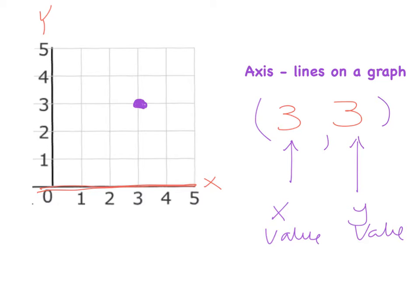If I was to do this red dot here and ask to describe where is that, my red dot is, again, we always do the X value first. So on the X value it's one, and on the Y value it's in number two. So the coordinate is (1, 2).